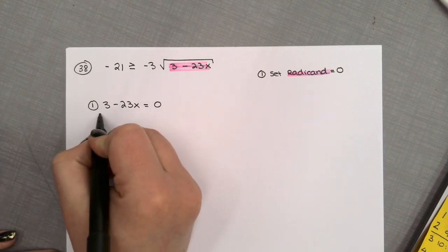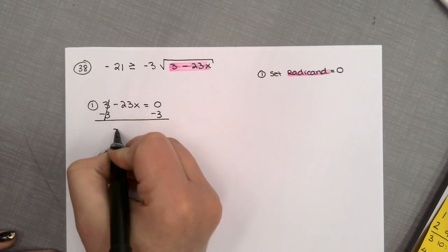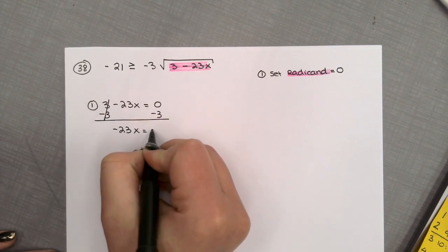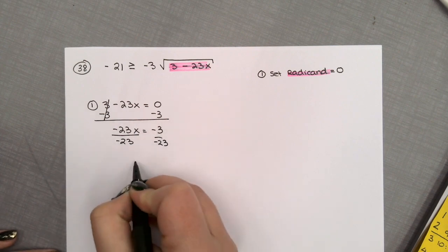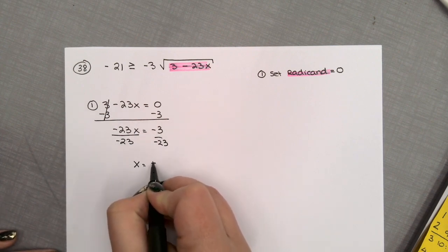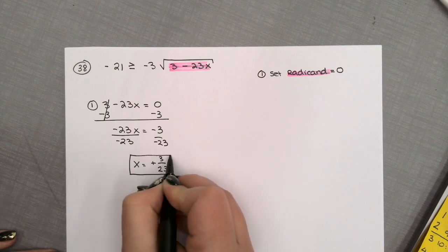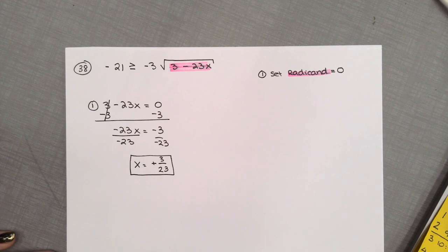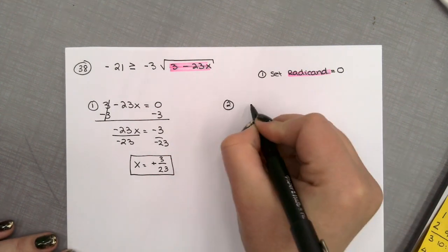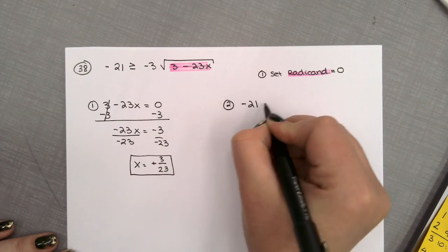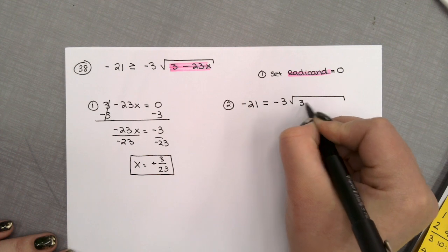Solving 3 minus 23x equals 0: subtract 3, giving negative 23x equals negative 3. Divide by negative 23. Decimals are not allowed, so we keep it as the fraction 3 over 23. Now pause — don't do anything with that x yet. Step 2: create an equation from your inequality using an equal sign, and solve for x. Divide by negative 3: 7 equals the square root of 3 minus 23x.